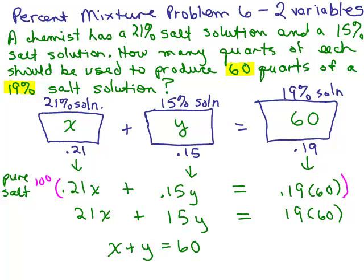In fact, if you want to not even multiply both sides by 100, keep everything with decimals, 0.21X plus 0.15Y equals 0.19 times 60. Just work the whole problem out using decimals, using the addition elimination method, or the substitution method, you will still get X equals 40.